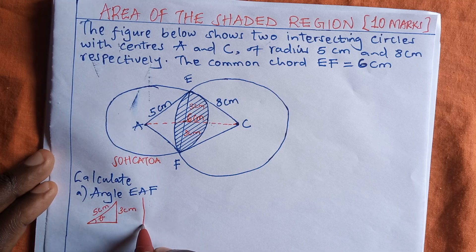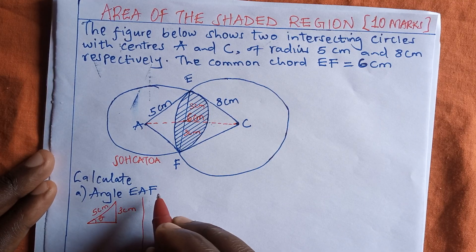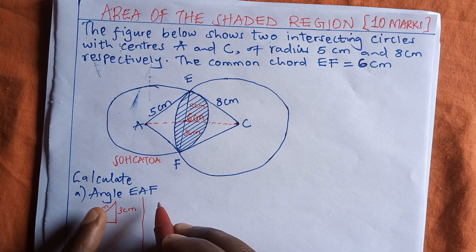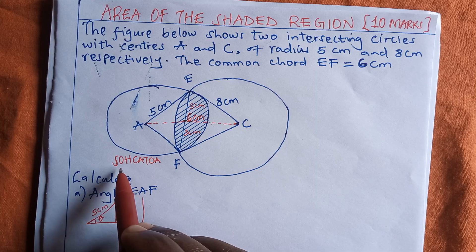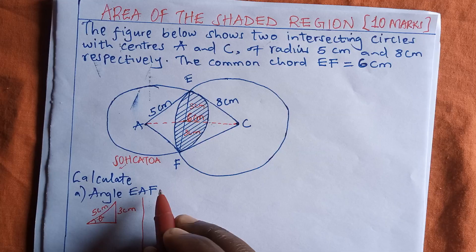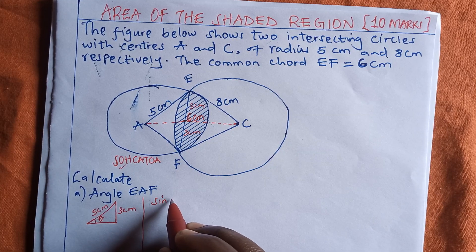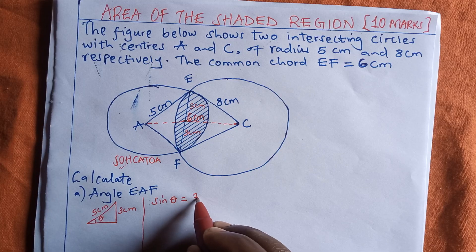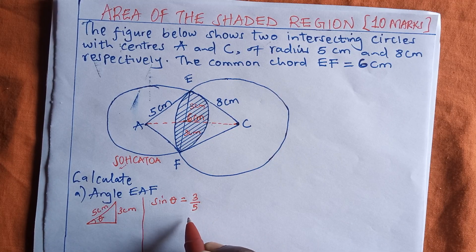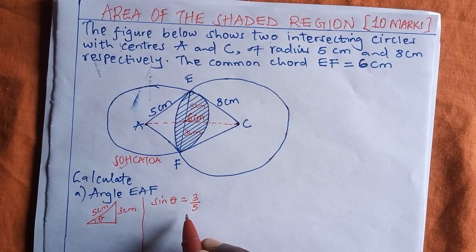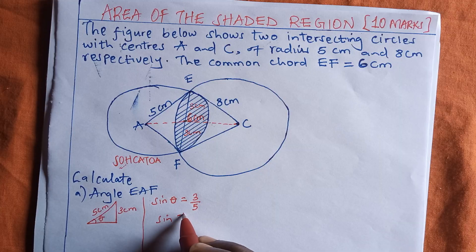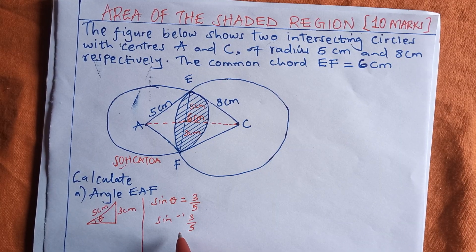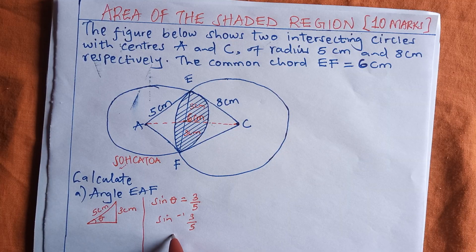We are interested in angle theta. Since we have the opposite and hypotenuse, we use sine: sine theta equals the opposite over the hypotenuse, which is three over five. Taking the inverse sine of three over five gives us 36.87 degrees.